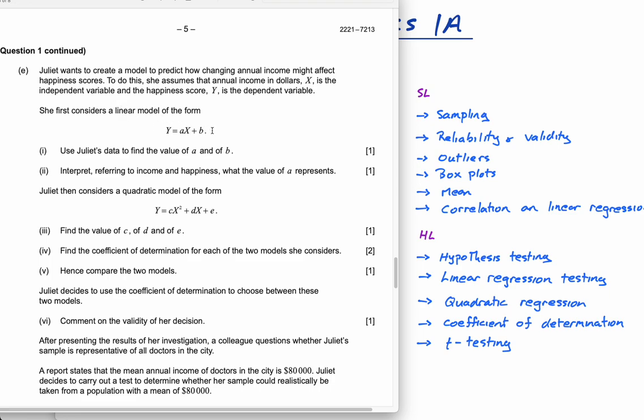Guys, even in SL or HL, you know how to do this. Well, once you do this topic, you will know how to do it. You find the model. That's this question here, find A and B. And then you interpret it referring to income and happiness. So always talk about the model in context, relating to what you're dealing with. In this case, income and happiness. In your case, it can be on whatever you're doing.